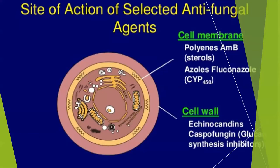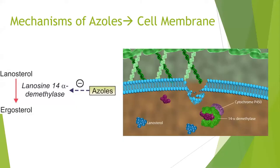There are three main types of antifungals: two act on the cell membrane — azoles and polyenes such as amphotericin B — and those which act on the cell wall, echinocandins. Azoles inhibit the fungal cytochrome P450-3A enzyme, lanosterol-14-alpha-demethylase, preventing conversion of lanosterol to ergosterol. Integrity of the fungal cell membrane is therefore disrupted, which leads to cell lysis.